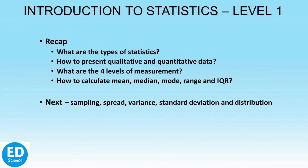In the first session we briefly touched upon presenting qualitative and quantitative data, and in the second session we covered the four levels of measurement: nominal, ordinal, interval and ratio, and we listed the type of operations which can be performed for them. We explored mean, median, mode, range and IQR, and in this session we shall explore sampling, spread, variance, standard deviation and distribution in a very simple way.